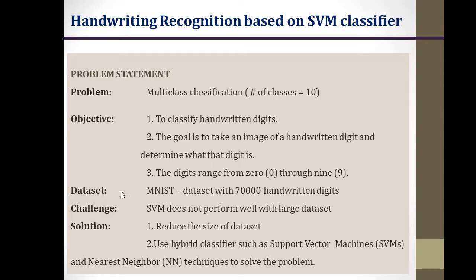We are going to use the famous MNIST dataset, which comprises 70,000 images. The challenge with this project is that the SVM classifier may not work well with such a huge dataset. There are two solutions: the first is to reduce the size of the dataset and work with the existing SVM algorithm; the second is to hybridize the SVM algorithm with a nearest neighbor technique to improve its performance and make it suitable for large datasets.